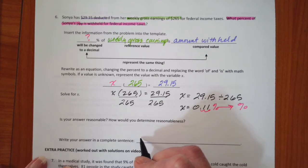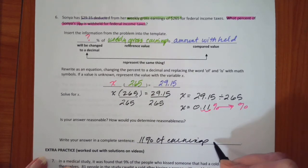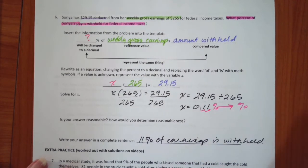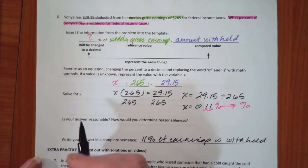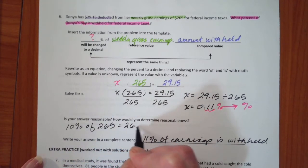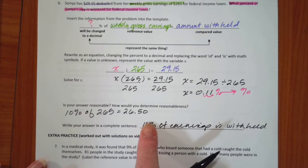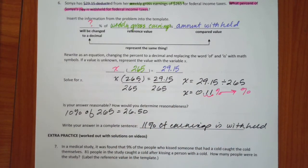So I can say 11% of earnings is withheld. Let's see what happens on this. Is it reasonable? 10% of 265 is 26.50, we know that just moving the decimal over. 11% is a little bit more than that, and 29.15 is a little bit more than 26.50.